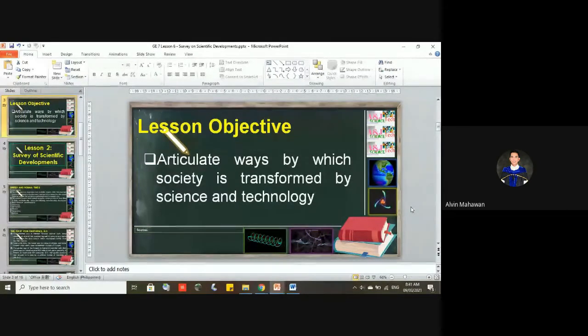It is expected that you'll be able to articulate ways by which society is transformed by science and technology. What do you mean by articulate ways by which society is transformed by science and technology? What might be the possible ways that you as a student can contribute to the transformation made possible by science and technology? How is that possible?